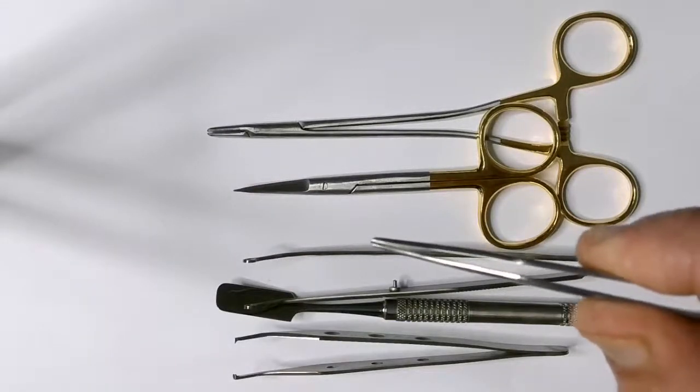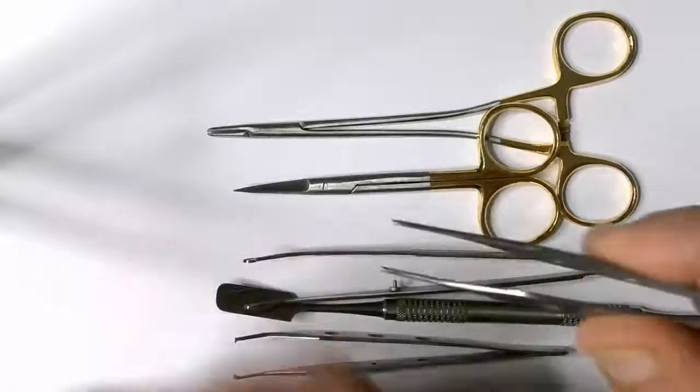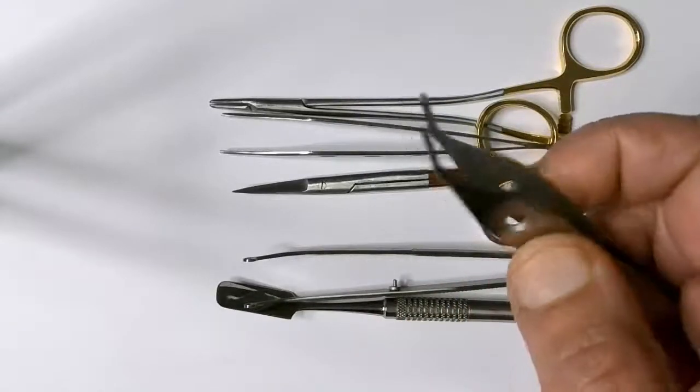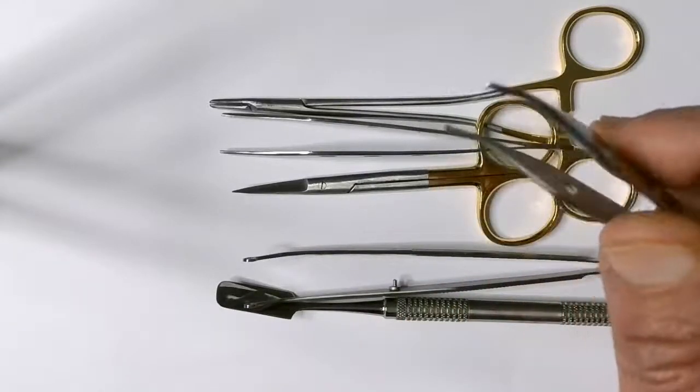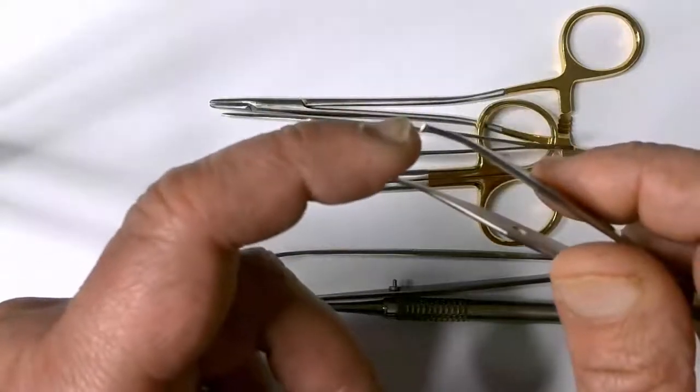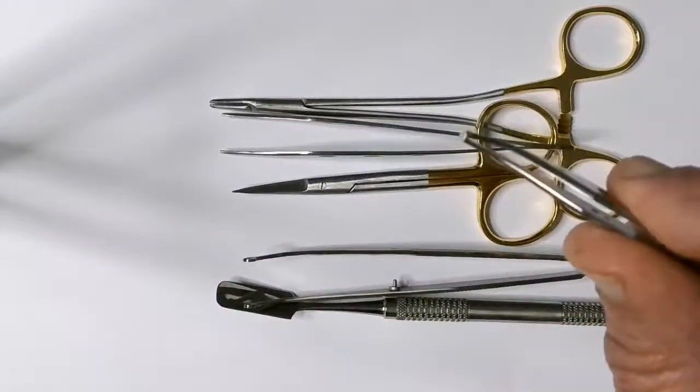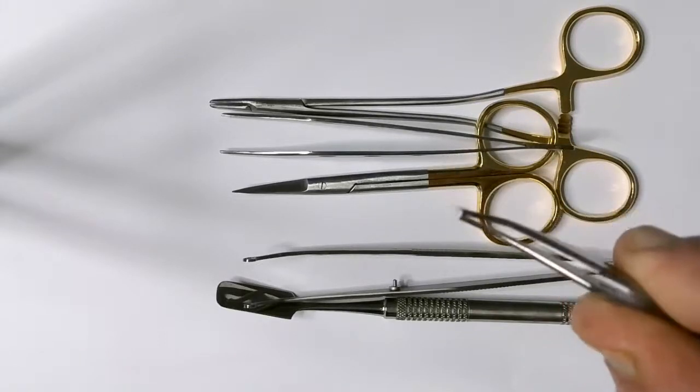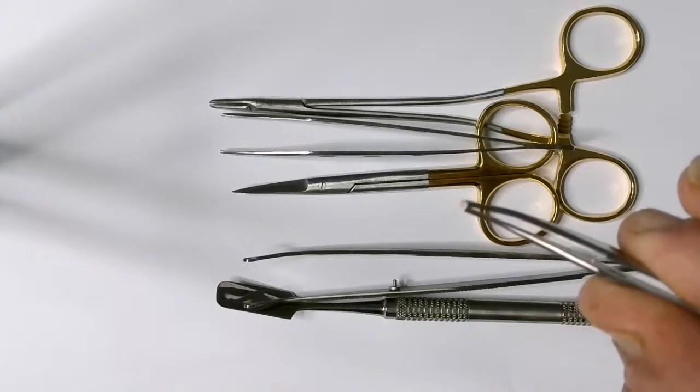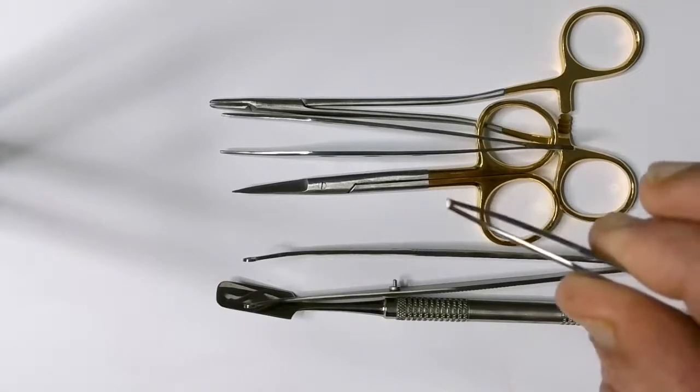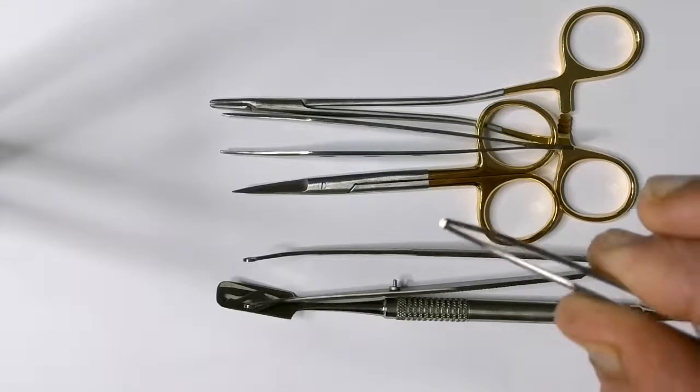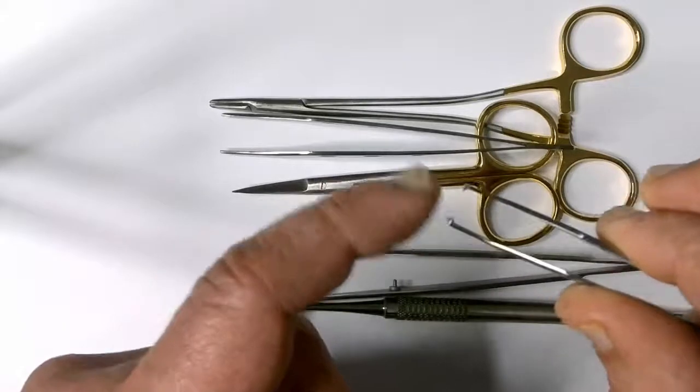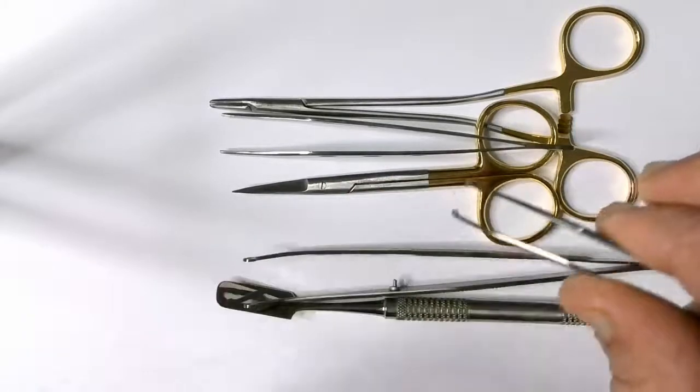The toothed forceps, as you can see, it's got a tooth here and a groove there. So when you hold the tissue, the tooth and the groove meet and they lock the tissue in place. I only use this if I have nice and thick keratinized mucosa. I wouldn't use this in thin tissue because as I'm pulling it, it could rip it or cause a tear with this tooth.